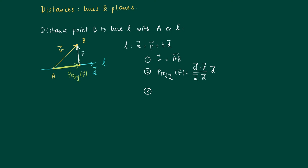Then we have the vector V minus the projection of V on D, and we want to know the length of this vector. The length of this vector gives us the distance from B to L.